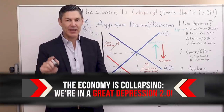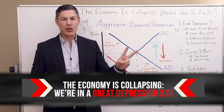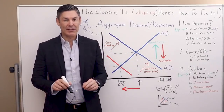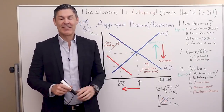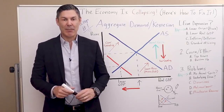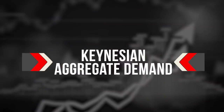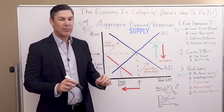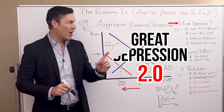The economy is collapsing. We're in a Great Depression 2.0, but there is a way to fix it. I'm going to explain this to you in three simple, fast steps. Step number one, let's go over the Keynesian idea of aggregate demand and aggregate supply. Before we get there, I want to explain why I said I think we're in a Great Depression. I think you'll agree.